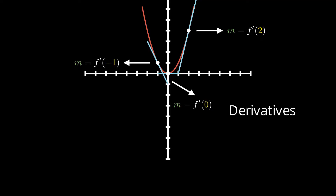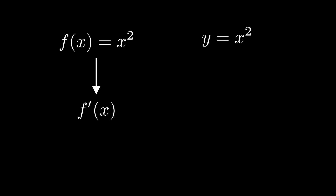When it comes to denoting the derivative, there are several ways. If we have f of x equals x squared, we commonly write the derivative as f prime of x. Since we also interchange f of x and y, if it's written as y equals x squared, the derivative can be written as y prime. And you'll also see dy over dx. These three notations all mean the same thing.